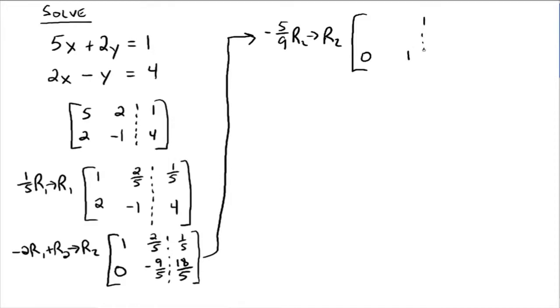And so we'd have 0, 1, and negative 5 ninths times 18 fifths, that goes to negative 2. And if you need to multiply that on the side, go off to the side and do it. We didn't do anything to row 1, so we'll leave row 1 alone, 1, 2 fifths, and 1 fifth.